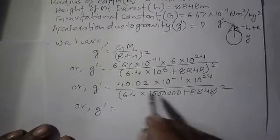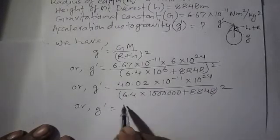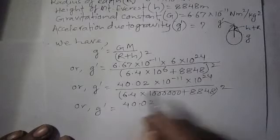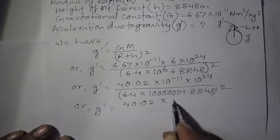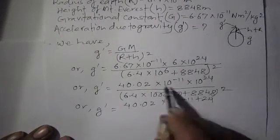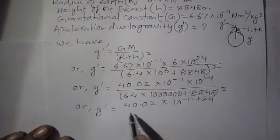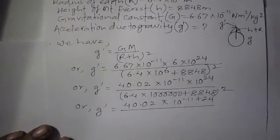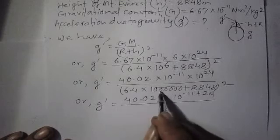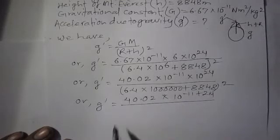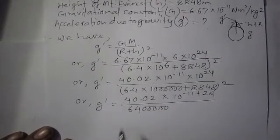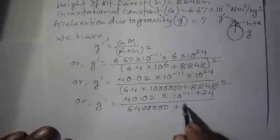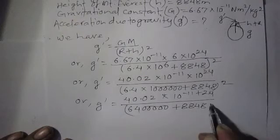So g dash equals: in the numerator, 10 to the power minus 11 plus 24 — same base, so powers add — giving 10 to the power 13. The number 40.02 remains. In the denominator, 6.4 into 10 to the power 6 written as a full number is 6,400,000. Adding 8848 gives 6,408,848. This whole number is then squared, meaning we multiply 6,408,848 by itself.